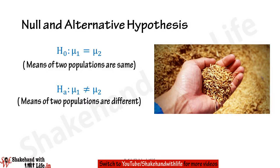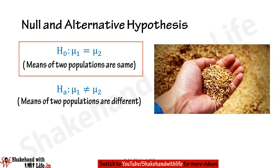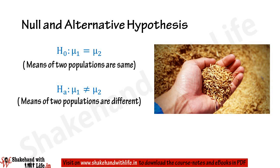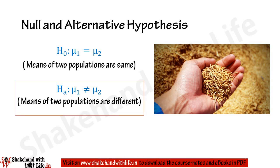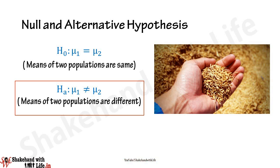To solve this problem, first state the null and alternative hypothesis. The null hypothesis is H₀: μ₁ = μ₂, which implies the population means are same and the samples are taken from the same population. The alternative hypothesis is Hₐ: μ₁ ≠ μ₂, which implies the population means are different and the samples are taken from different populations.